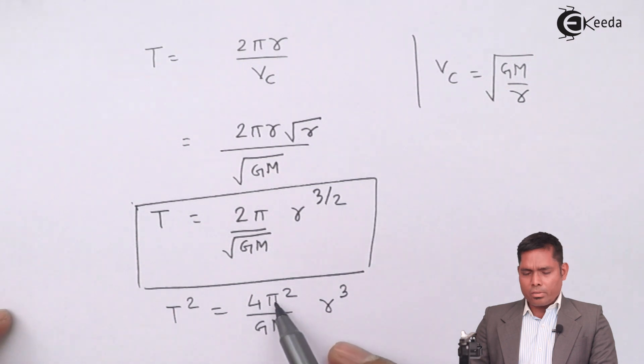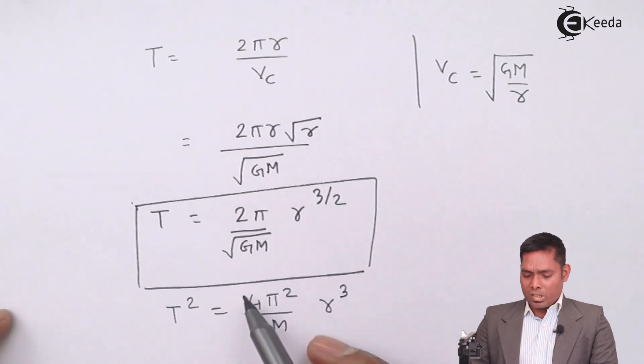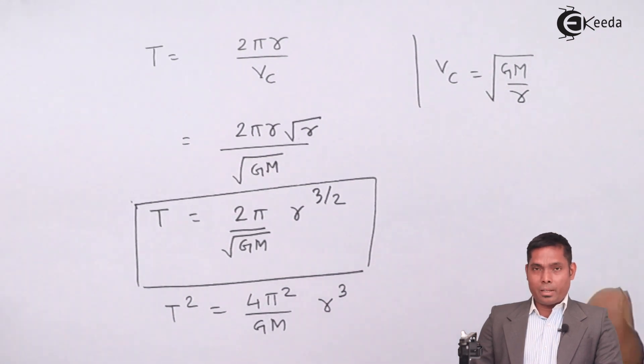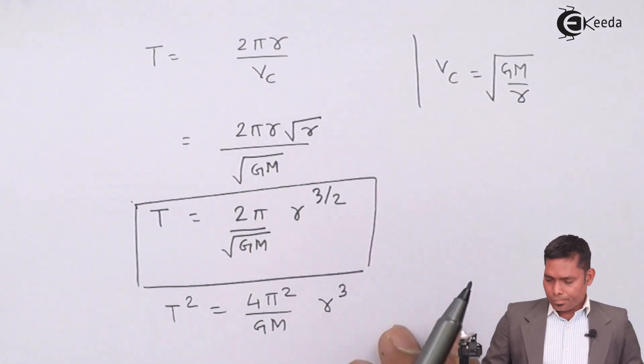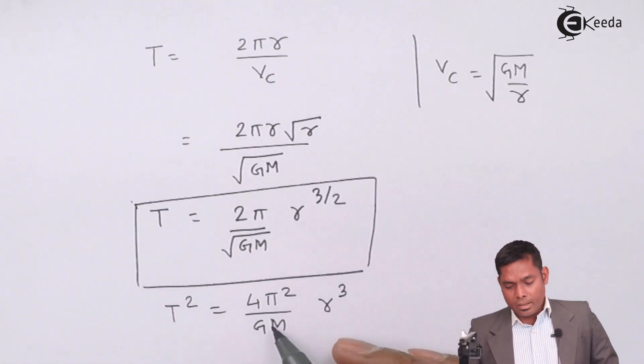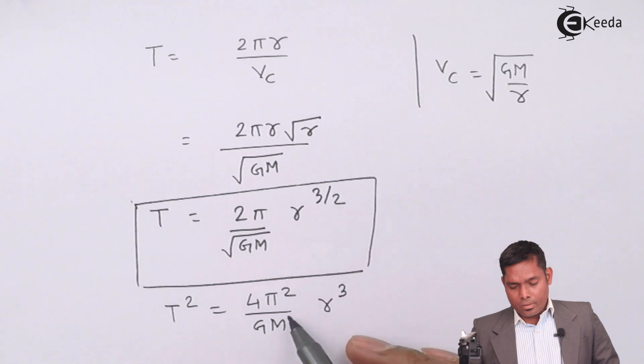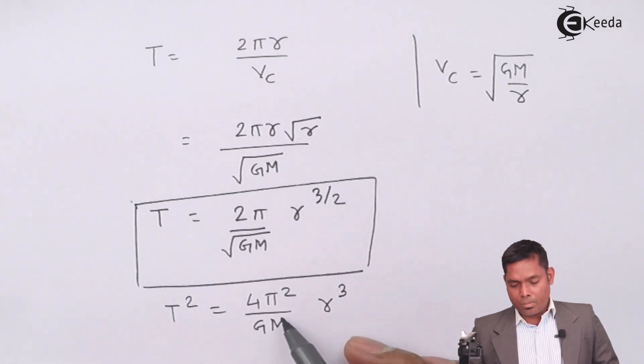4 is a constant, pi square is constant, g and m will not change for any planet. This mass m is the mass of the planet.